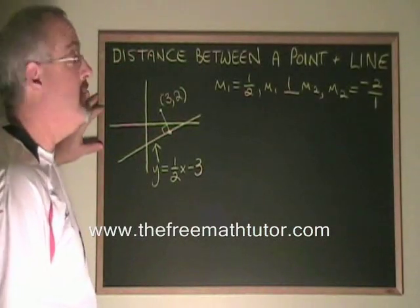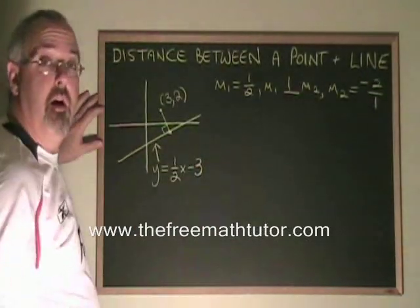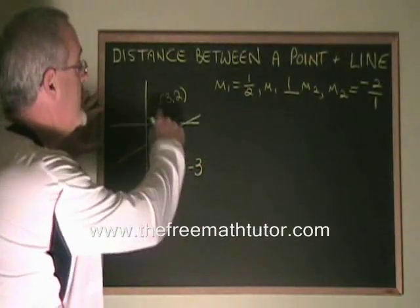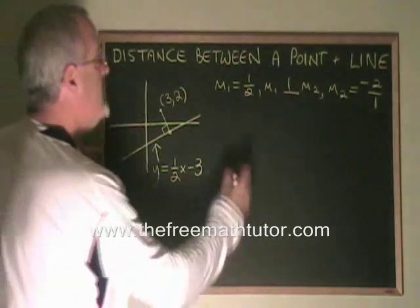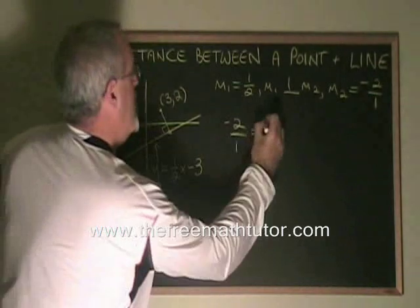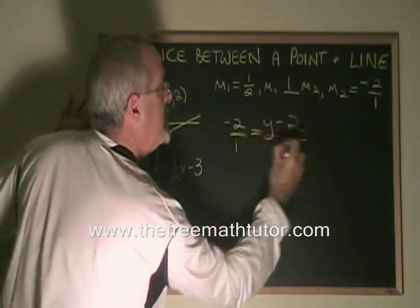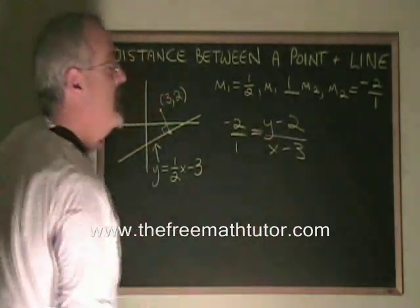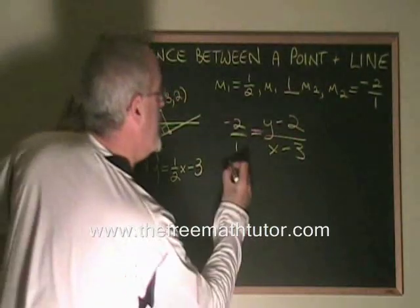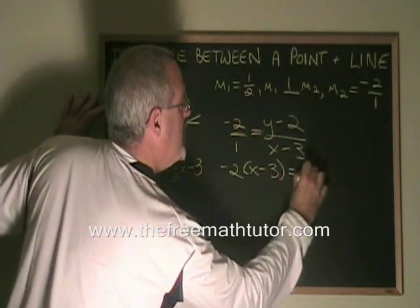Now, using the slope formula and this slope and this point, we're able to derive the equation of this second perpendicular line. Let's do that. Negative 2 over 1 equals y minus 2 over x minus 3. Cross multiplying, we get negative 2 times x minus 3 equals y minus 2.